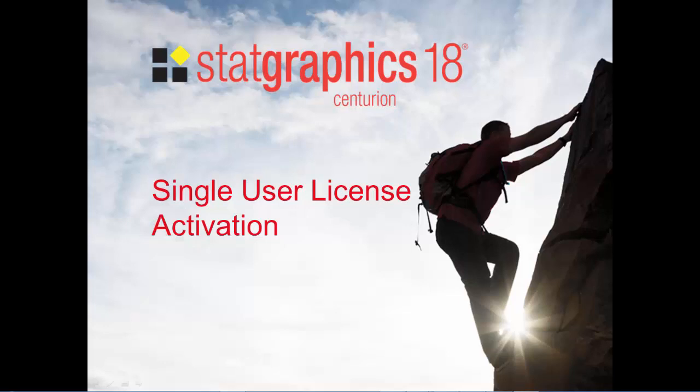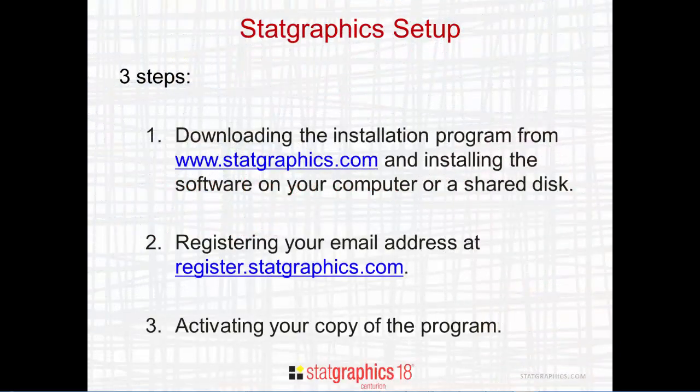This video describes how to activate a single user license for StatGraphics 18. Setting up a single user license is a three-step process. In step one, you download the installation program from www.statgraphics.com and install it on your computer. In step two, you register your email address at register.statgraphics.com. And in step three, which is the subject of this video, you activate your copy of the program.